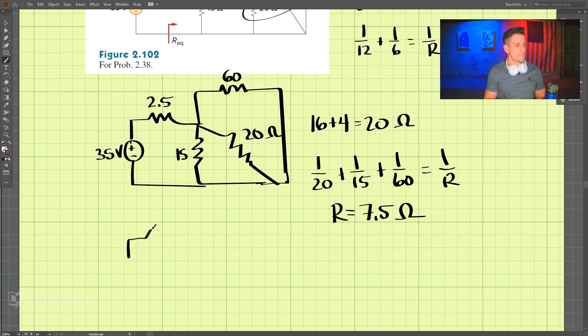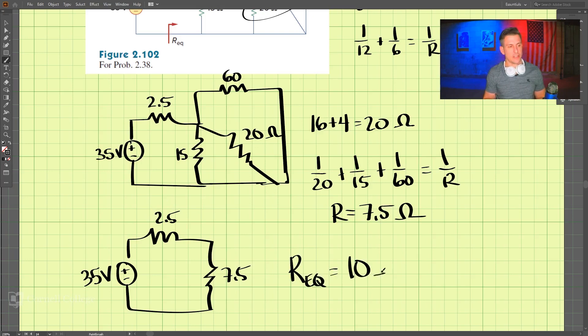Now let's redraw the circuit. Now this is 7.5, this is 2.5, and we have 35 volts here. So now we have simplified the circuit. These two are in series. So we add them together, 2.5 plus 7.5. So the equivalent resistance, Req, is 10 ohms.